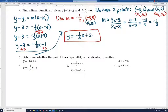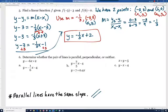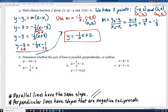Let's look at number 6. It says determine whether the pair of lines is parallel, perpendicular, or neither. This is a new topic for us in this course. Parallel lines have the same slope, and I think that's fairly intuitive. They go the same slant. And then perpendicular lines have slopes that are negative reciprocals of one another.